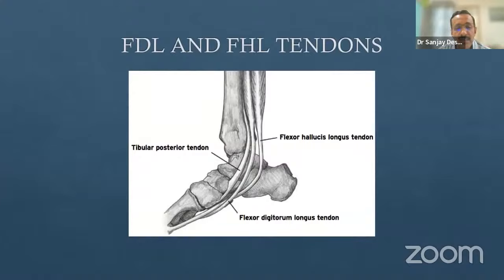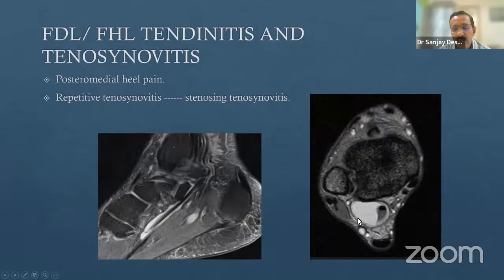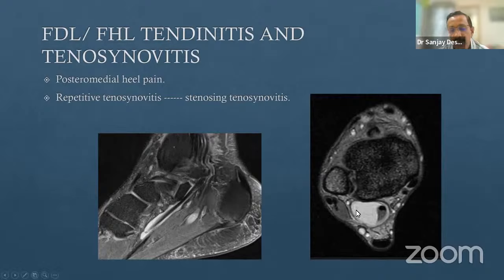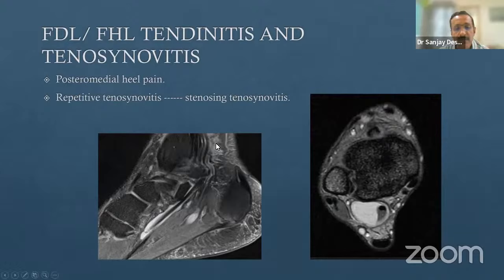Regarding the FHL tendon, a small amount of fluid along it is usually normal. The FHL tendon sheath communicates normally with the tibiotalar joint, similar to the popliteus tendon sheath in the knee. However, a significant amount of fluid along the FHL tendon is abnormal and can be termed tenosynovitis, especially in the setting of posterior ankle impingement, which is an indication that impingement is occurring.